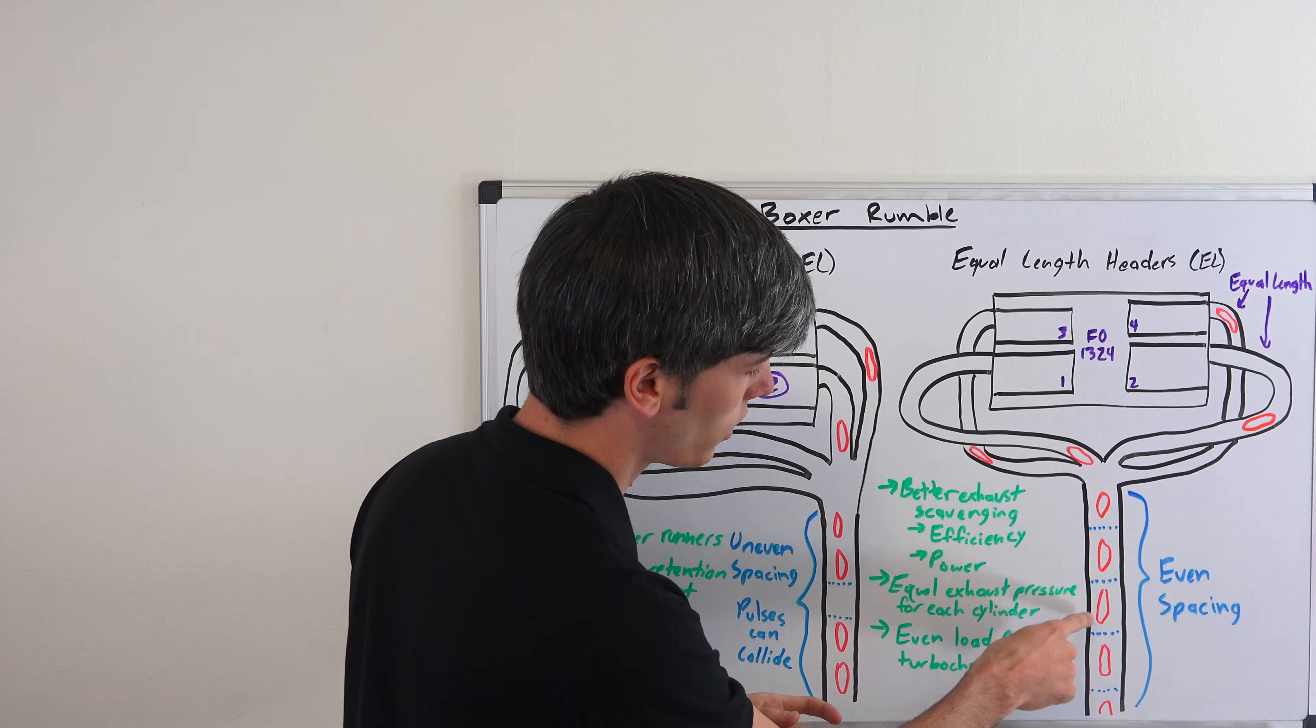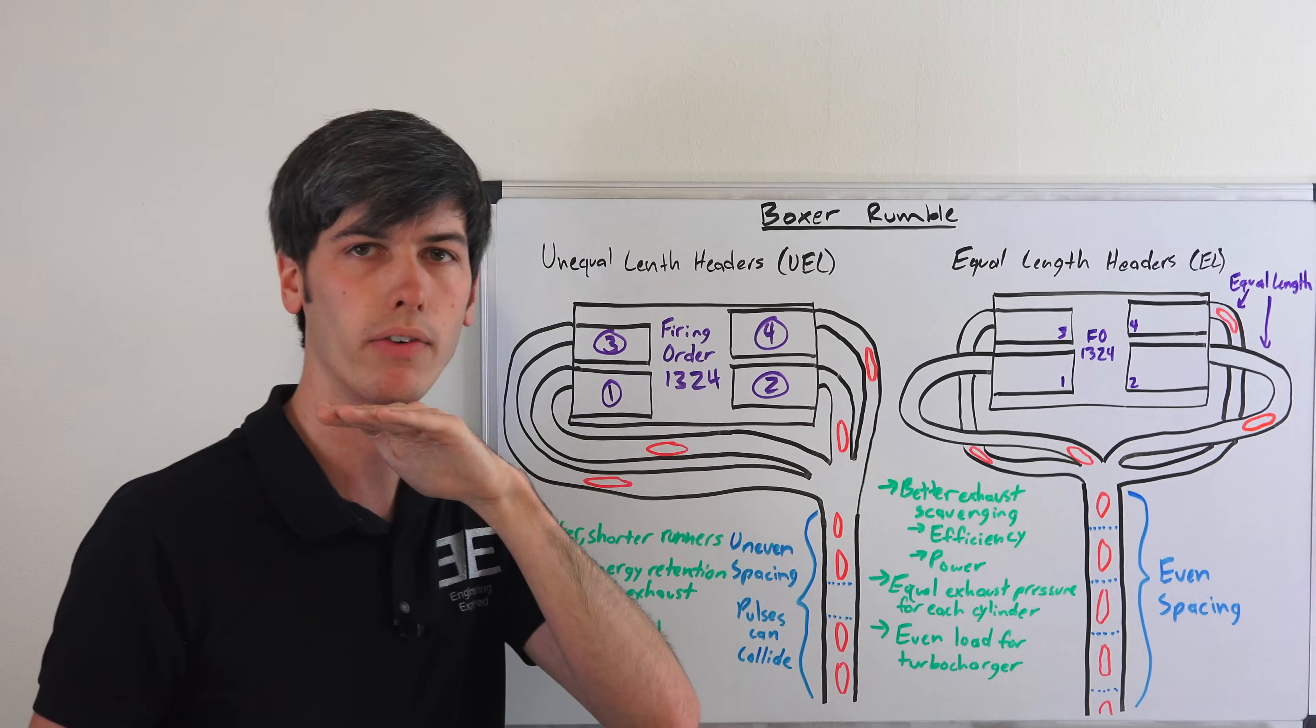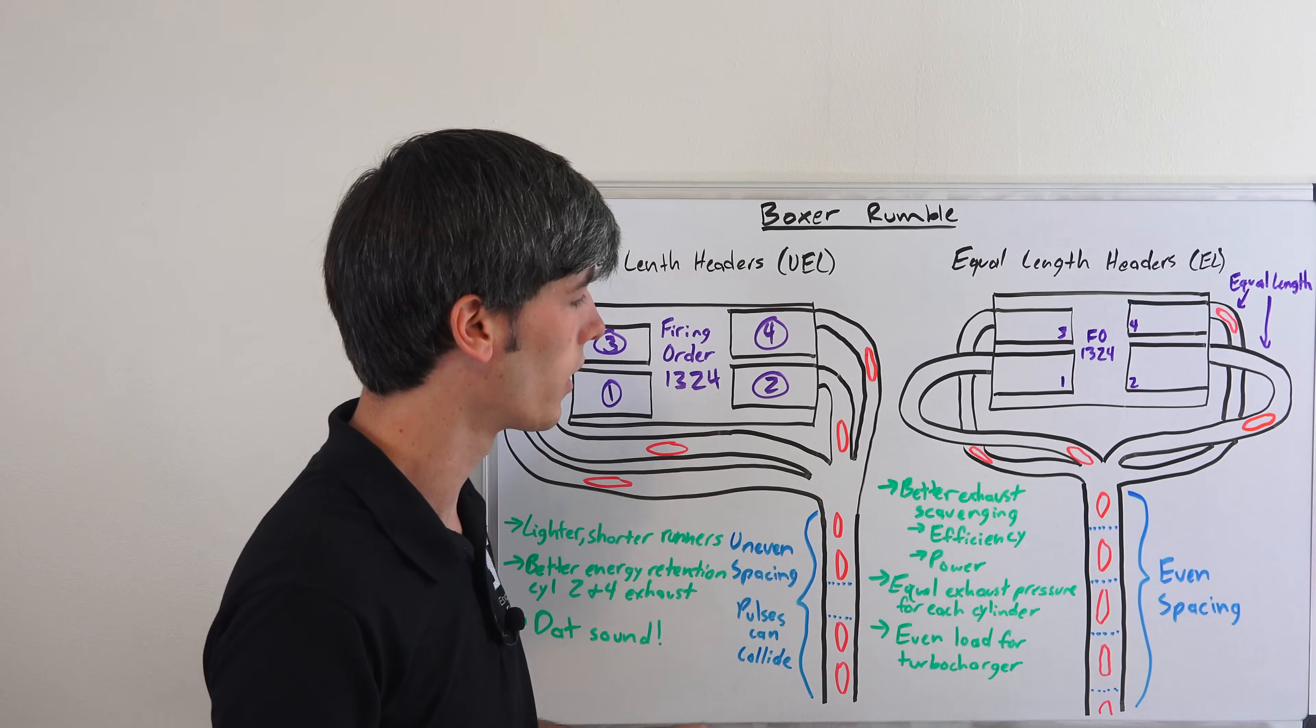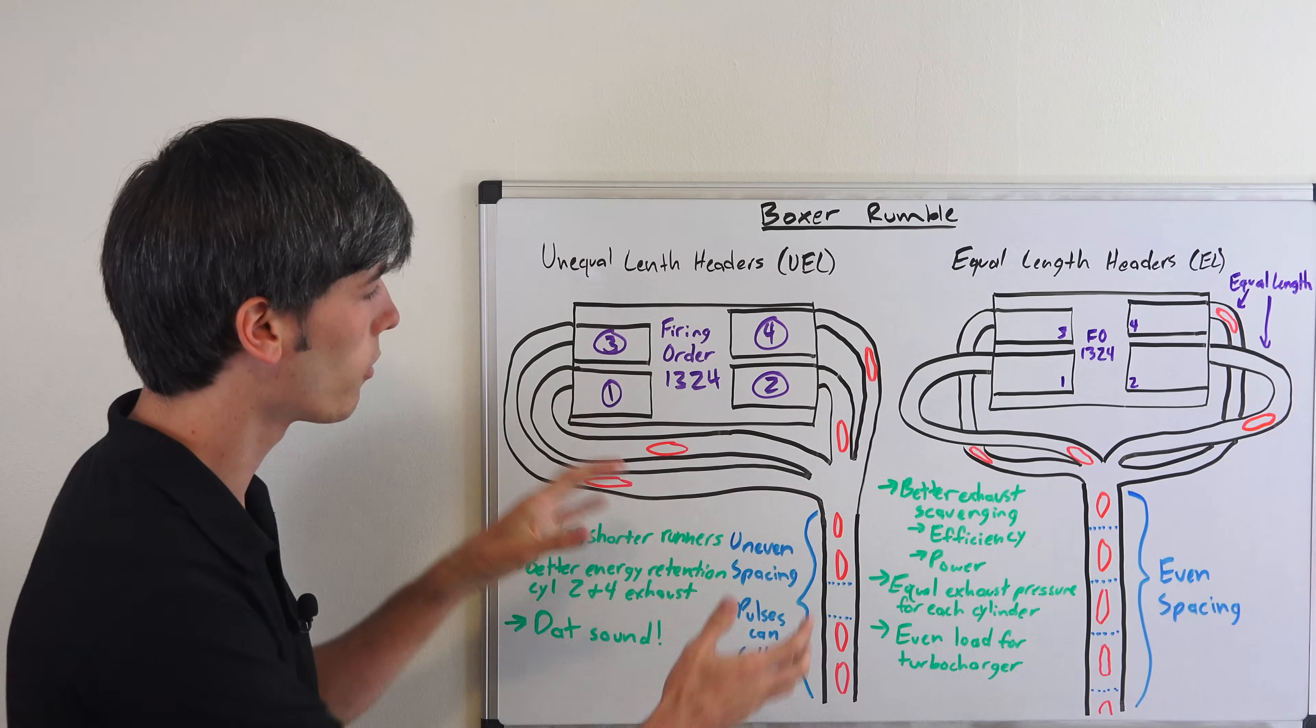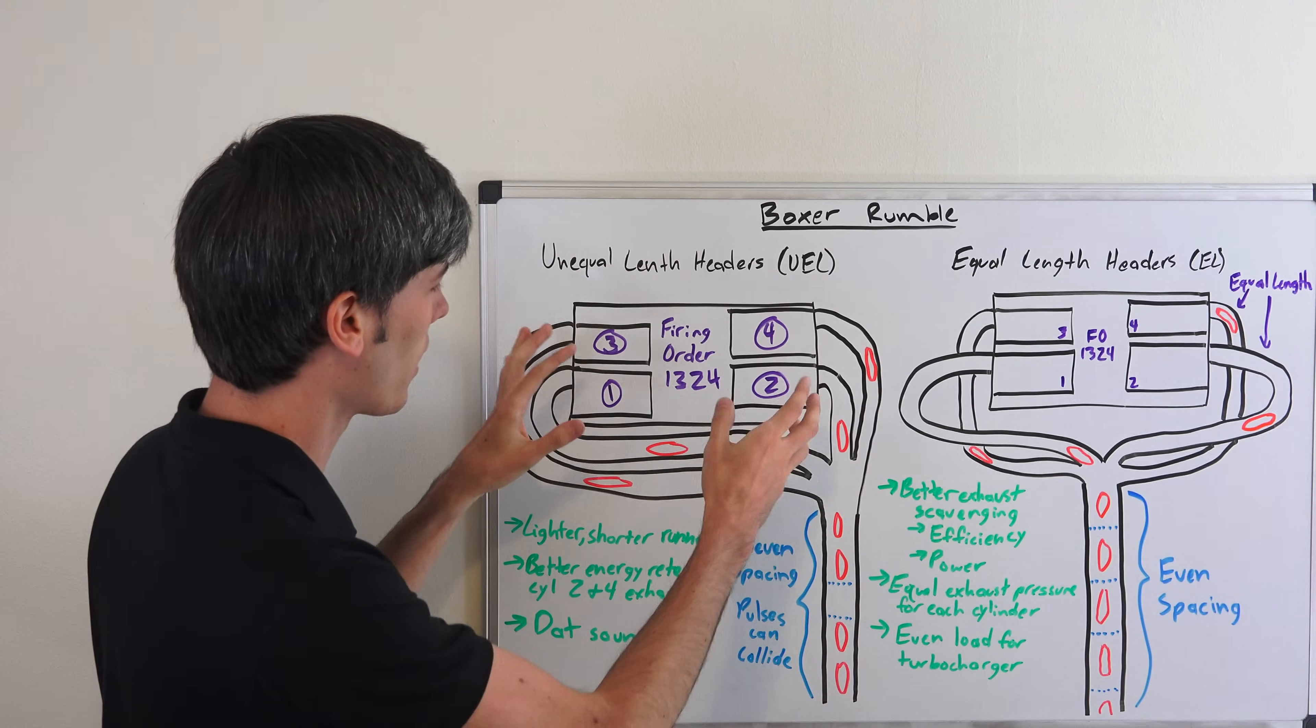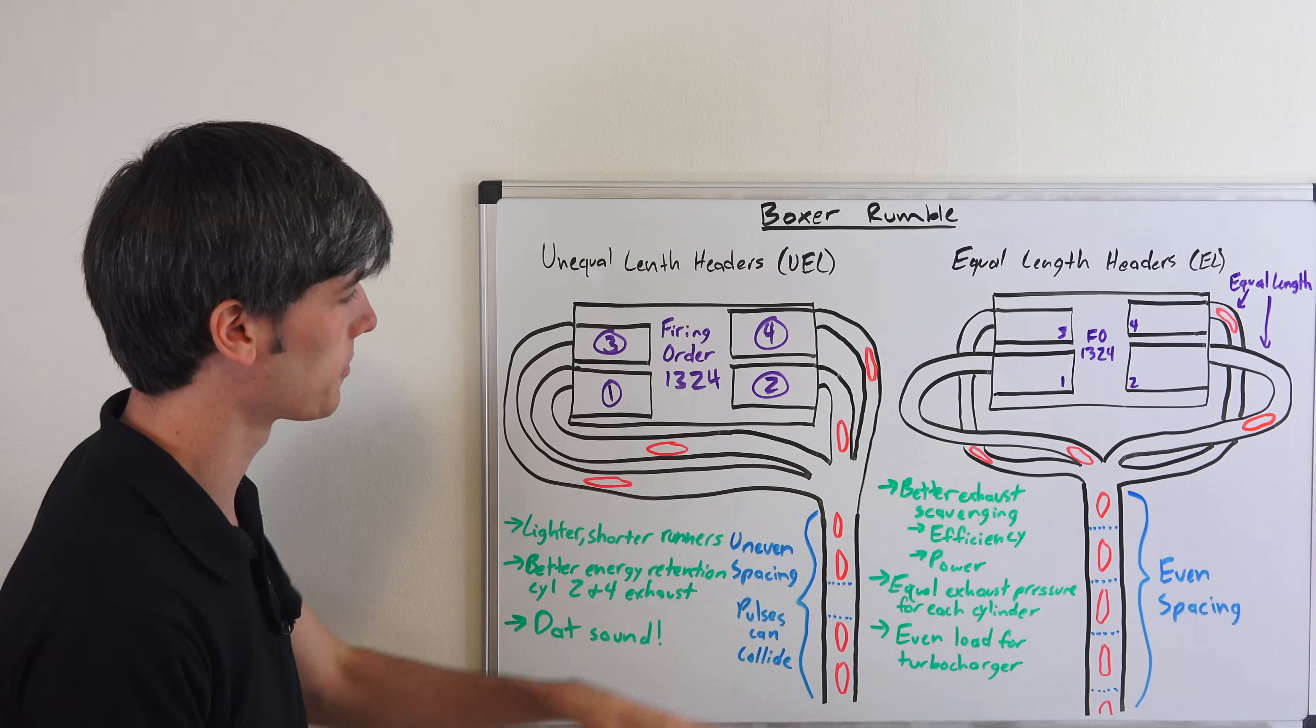Once you get to that single pipe to go towards the rear, you can see that they're evenly spaced and that's going to give you a very even tone coming out of the exhaust. That's what you have with the new WRX versus the new STI which is still sticking with this method, but I think eventually this will kind of die out.